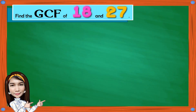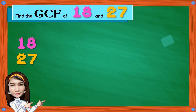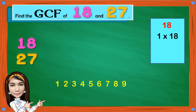Now let's proceed to finding the Greatest Common Factor of 18 and 27. Let's start with 18. Using the counting numbers 1 to 9, we have 1 times 18 is 18, 2 times 9 is 18, 3 times 6 is 18. 18 is not divisible by 4, not divisible by 5. 6 is already given. 18 is not divisible by 7, not divisible by 8.